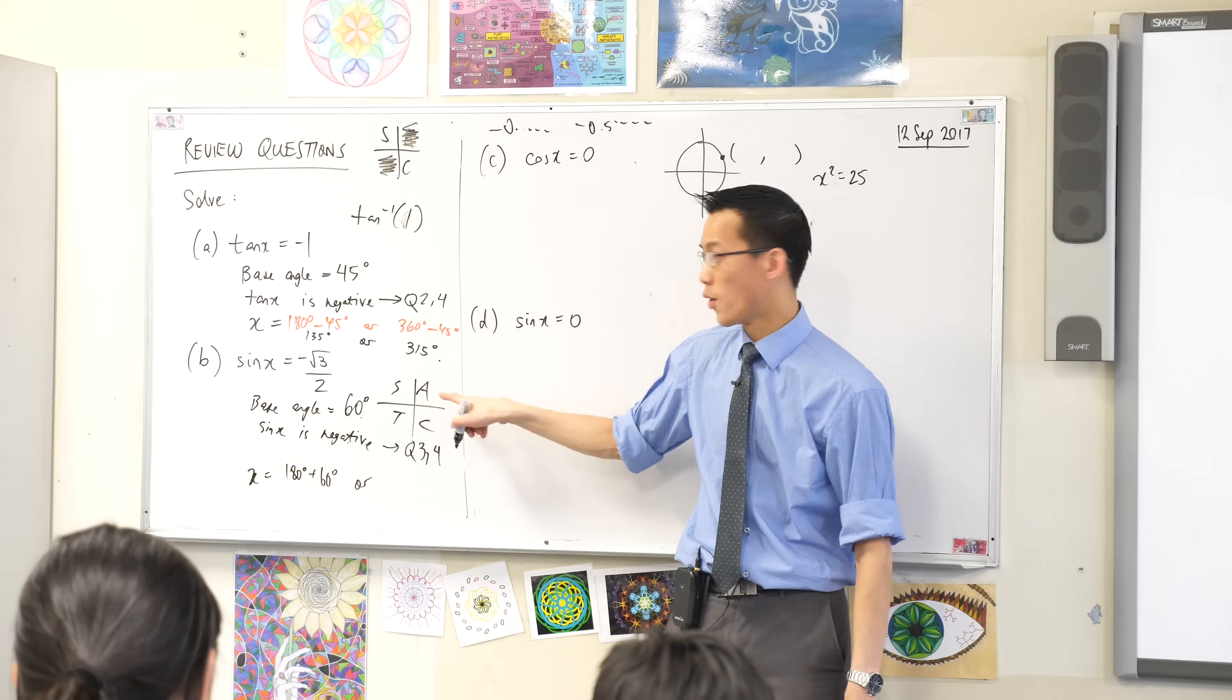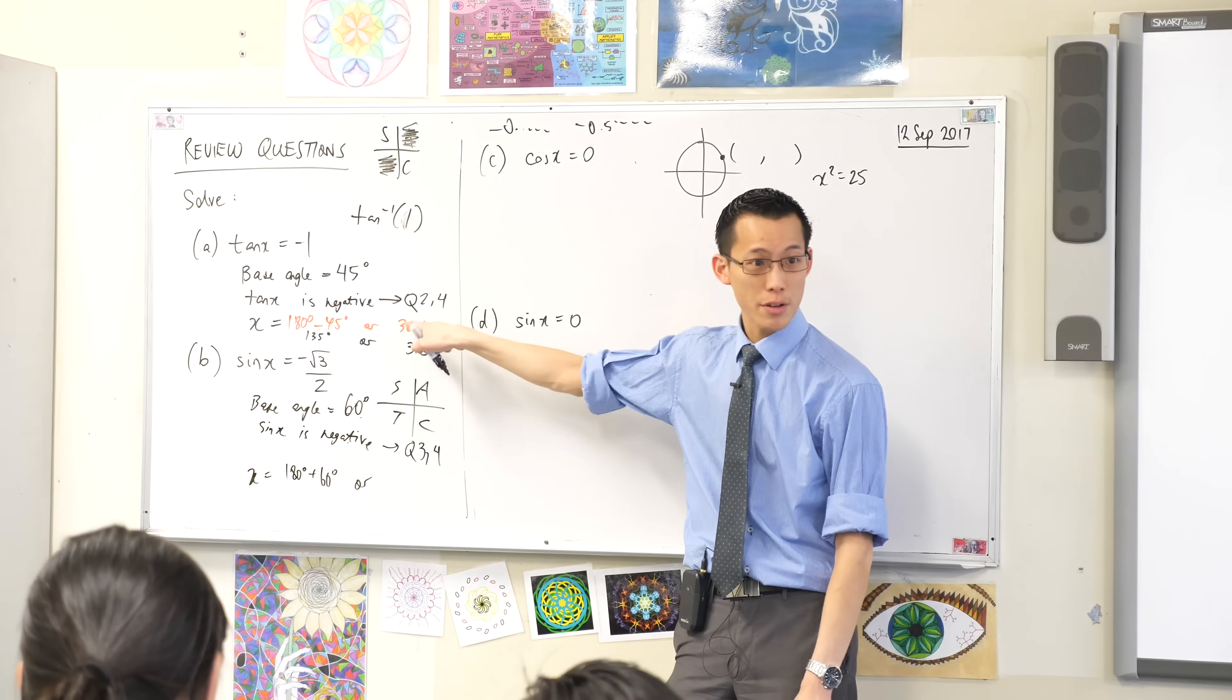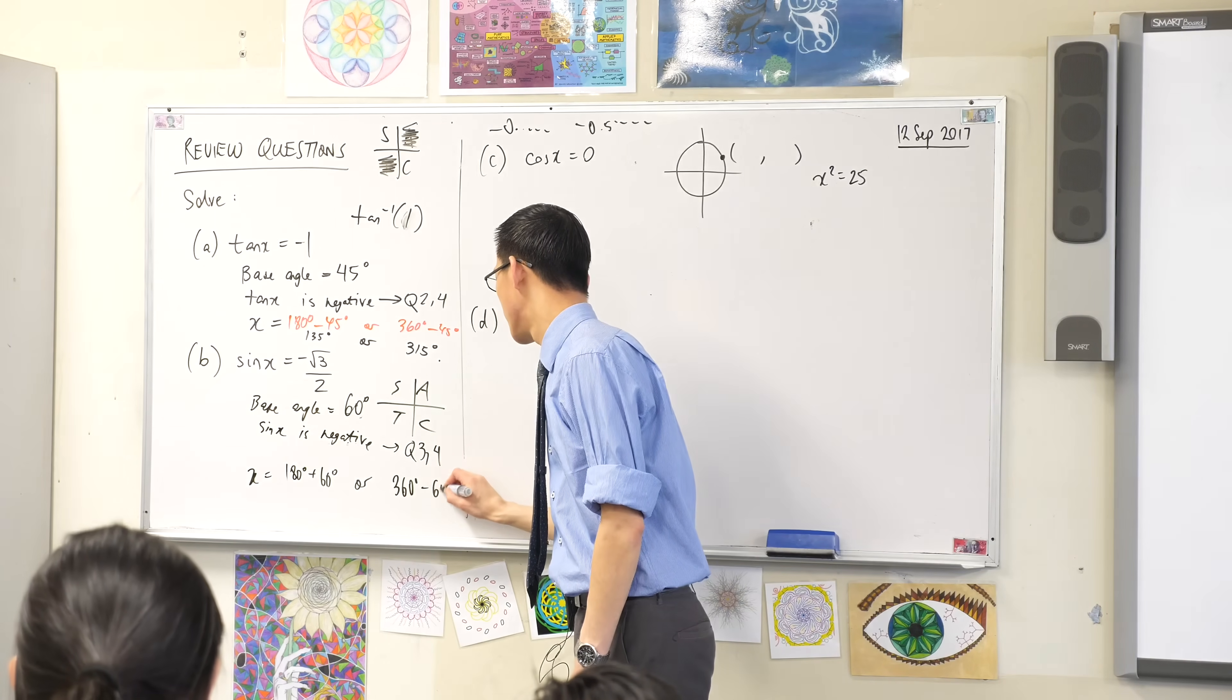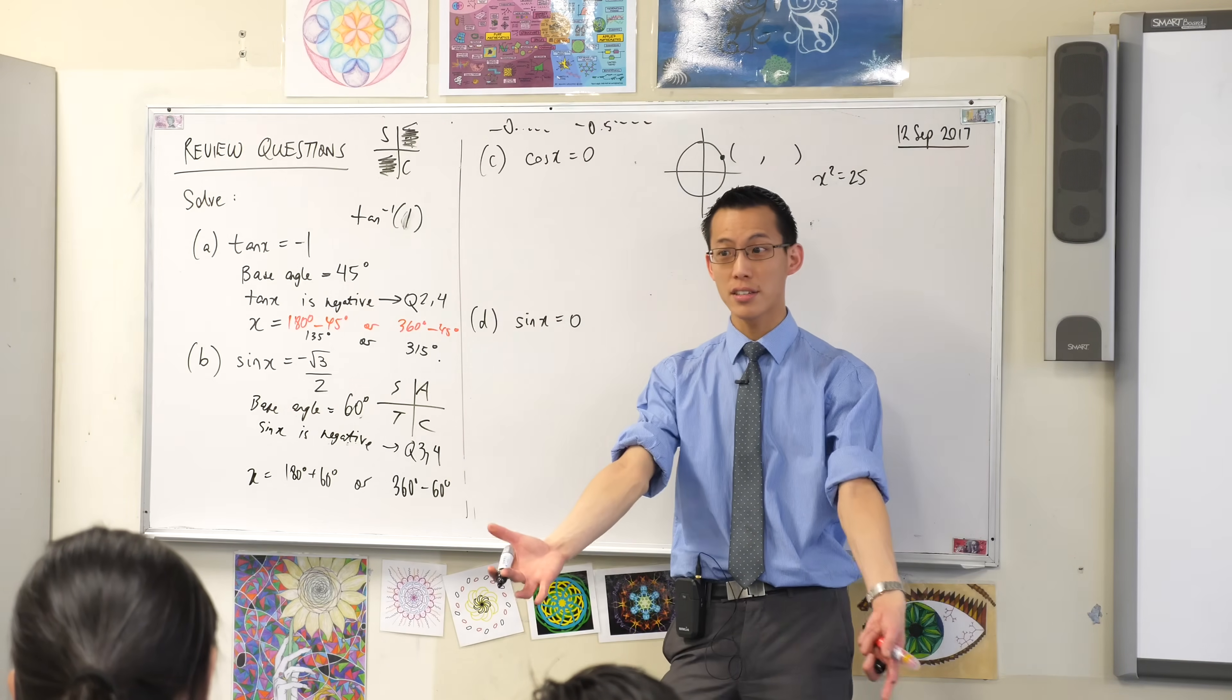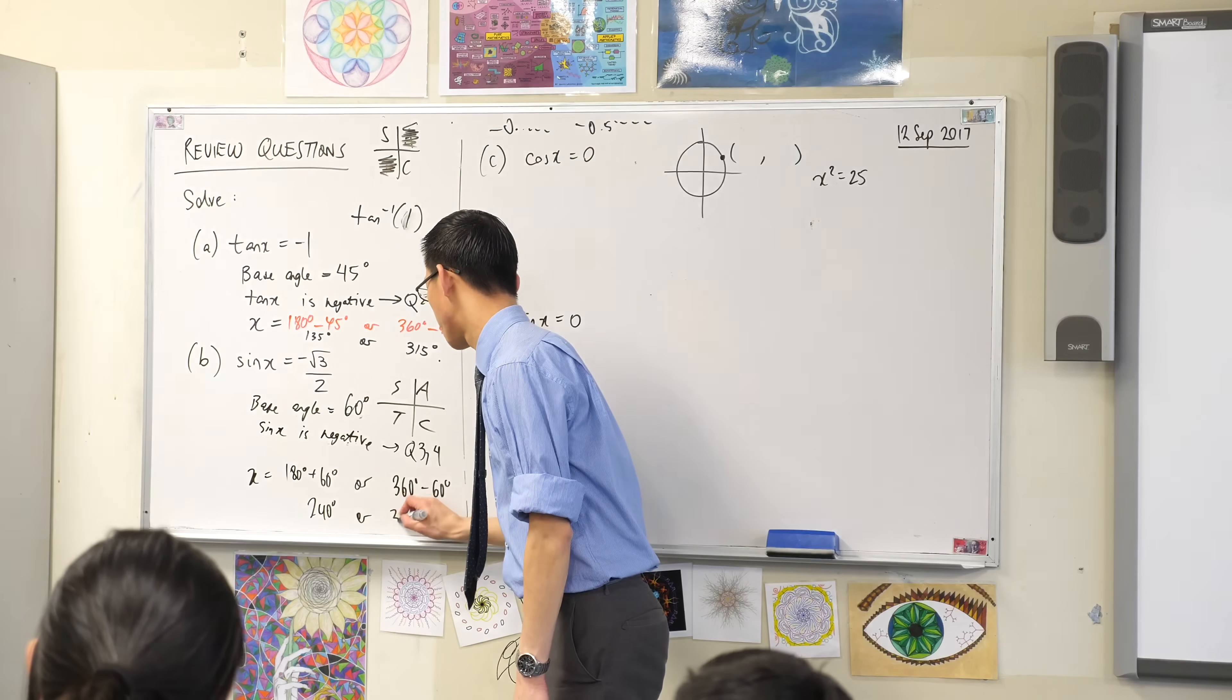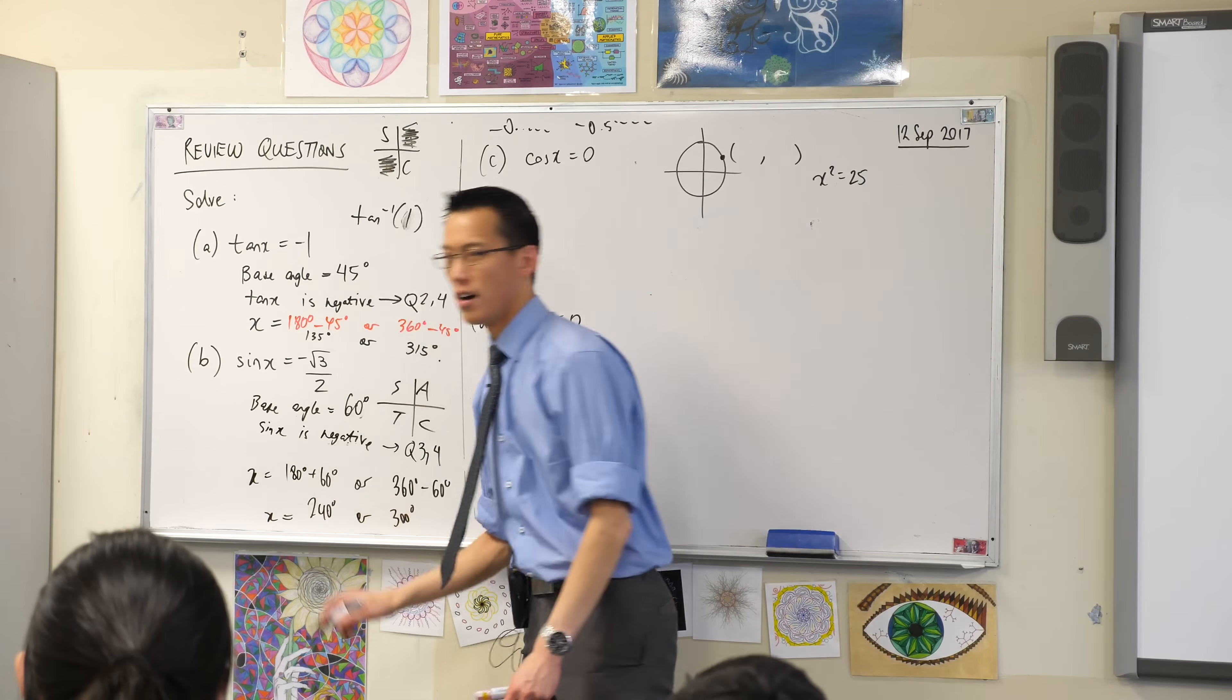Quadrant four, we just did this. Quadrant four is 360 take away. 360 take away. So our two answers. 240 and 300. Fantastic. Okay.